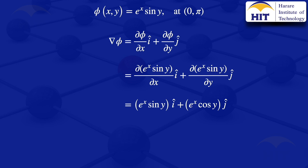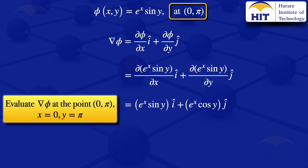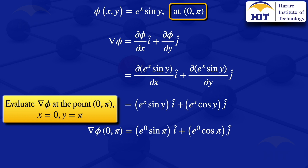For this question, we are asked to evaluate the gradient at the point (0, π). So at that point, x equals 0 and y equals π. Substituting into the gradient: grad phi at (0, π) equals exponent of 0 times sine π times i, plus exponent of 0 times cosine π times j. Exponent of 0 is 1, sine π is 0, and cosine π is -1, so we remain with minus j. Therefore grad phi at (0, π) equals -j.